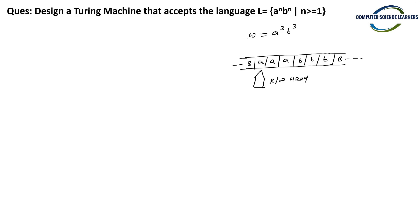Let us explain what to do step by step. We will read an A, and in place of that A we will write capital X. Basically, we replace A with X so that we know this A has been processed. There are equal numbers of A's and B's. From here, we will move towards the right.